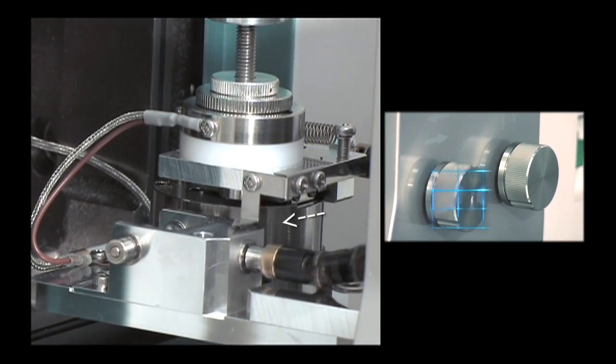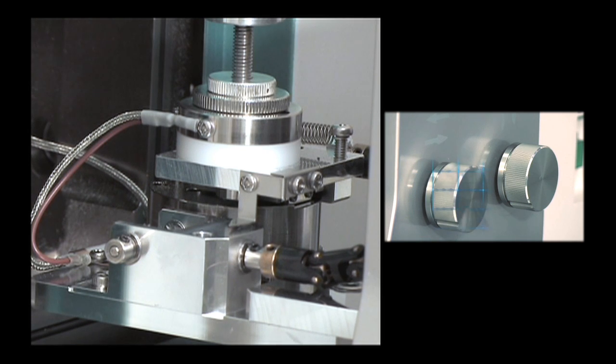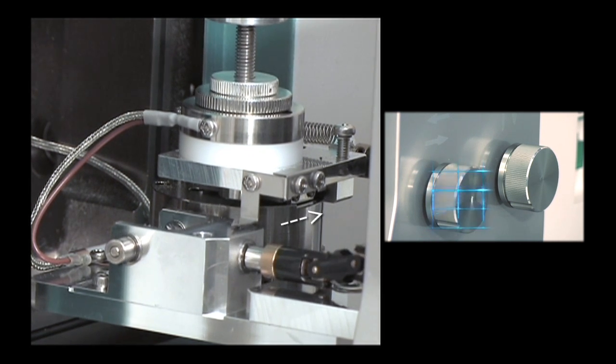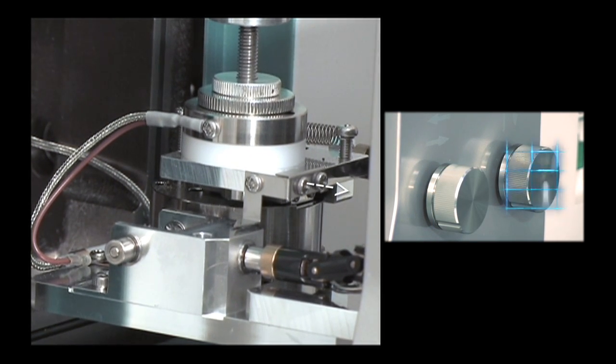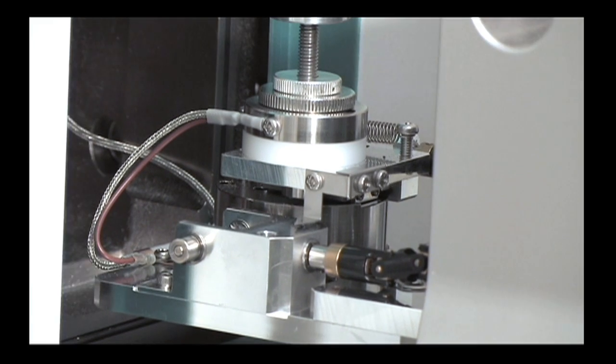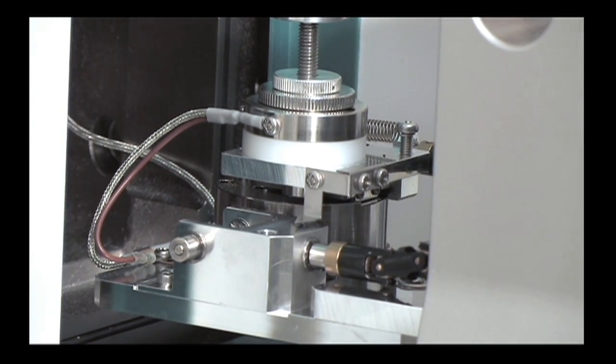This knob, you'll notice, if I turn it to the left, the specimen moves to the left. If I turn it to the right, it goes to the right. This one moves it toward me or away from me. And that's exactly what we'll see happen on the computer screen. So let's go ahead and start our vacuum.